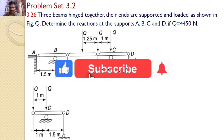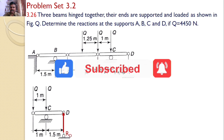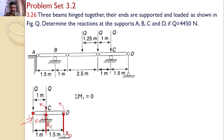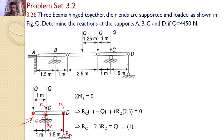On beam C-D, there is a support at D which introduces reaction R_D, and there is a roller support which introduces reaction R_C. There is also a force Q acting, but I don't know the direction of the reaction at the hinge. So I will take moments about that hinge point, so that I need not bother about that reaction force. Taking moments about point 1: R_C into 1 minus Q into 1 plus R_D into 2.5 equals zero, giving Equation 1: R_C plus 2.5·R_D equals Q.